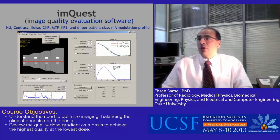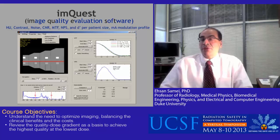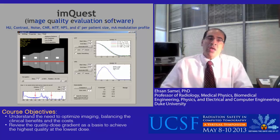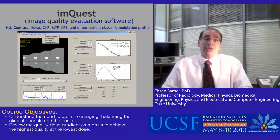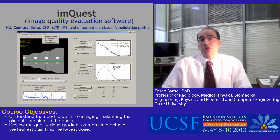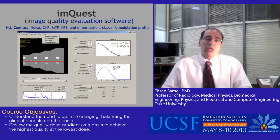We have developed computer software that integrates data from the phantom and provides measurements of the modulation transfer function as well as the noise power spectrum as a function of patient size and contrast level. It provides a metric of D', and from that we can extract the area under the ROC curve — a predicted AUC. Essentially, with this methodology, we can make a physical measurement and predict what the image quality would be in terms of diagnostic accuracy for an actual human observer or radiologist.